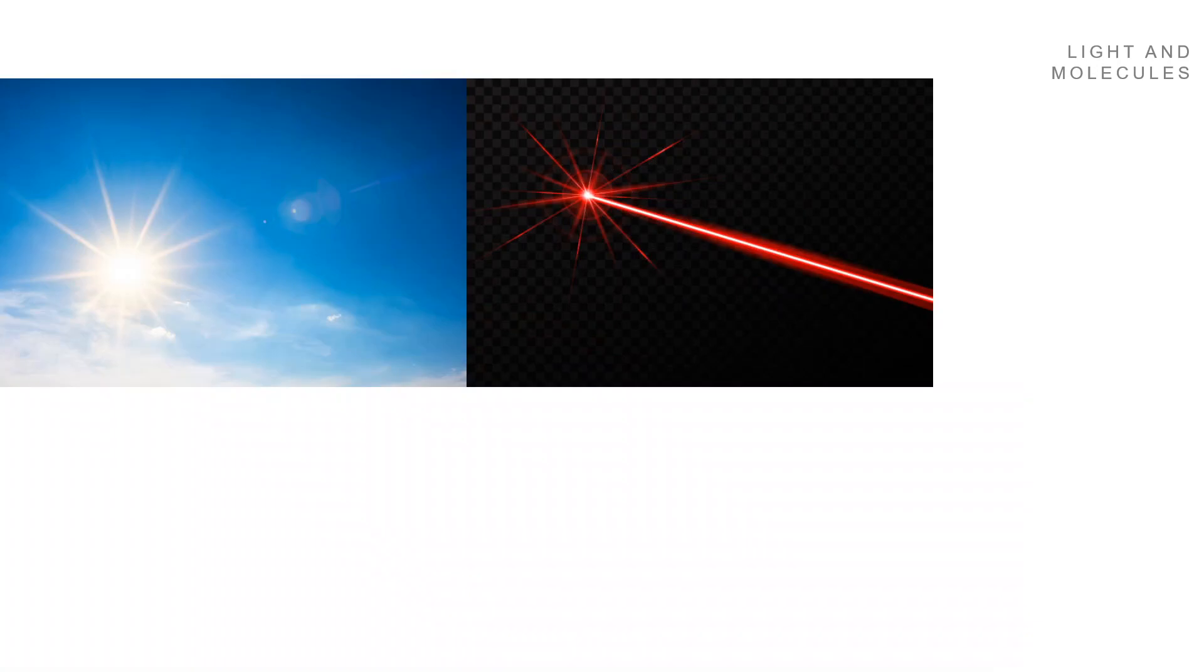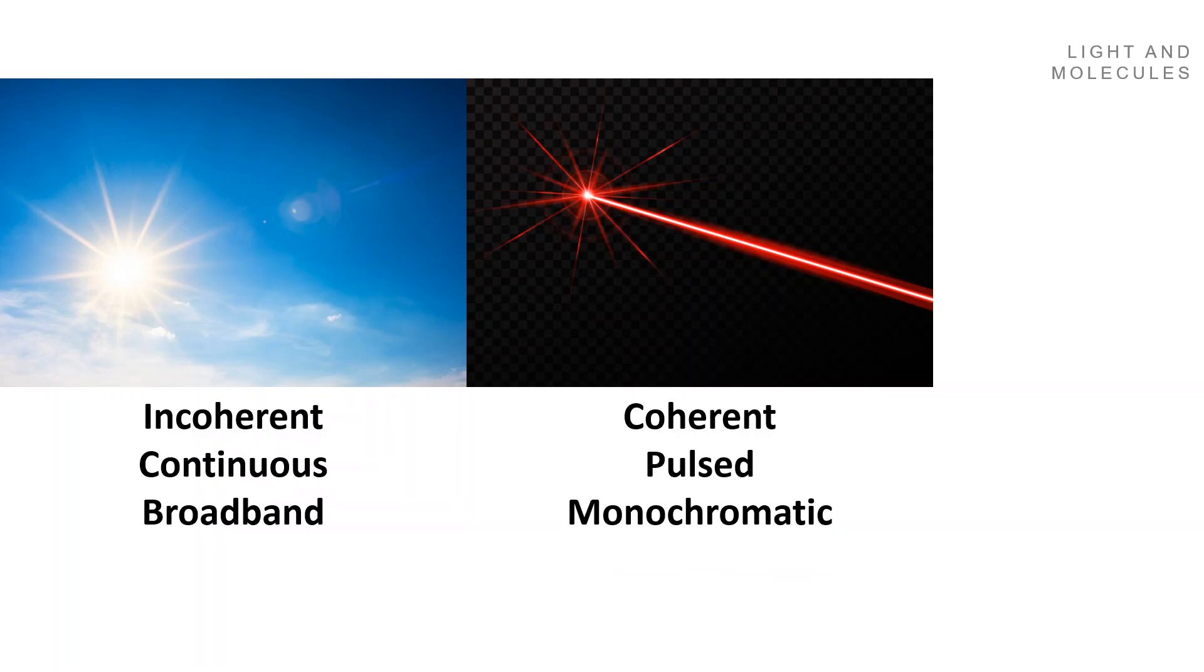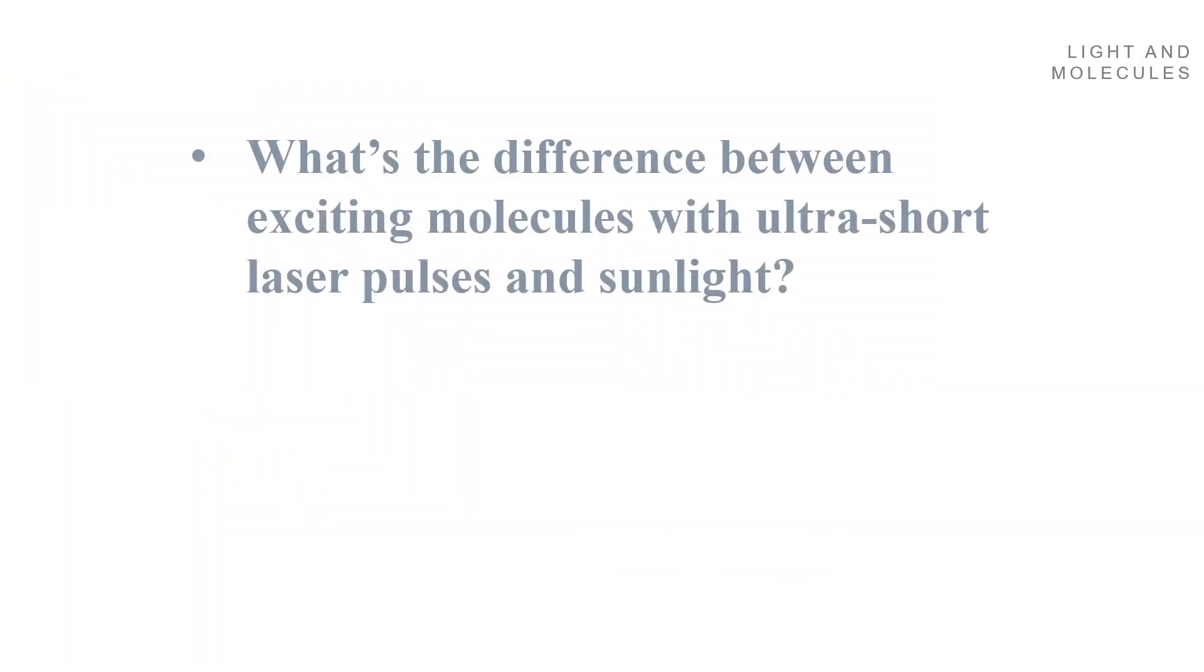However, these two light sources are very different. The sun is incoherent, continuous, broadband, while the laser is coherent, pulsed, monochromatic. Then, what's the difference between exciting molecules with an ultra-short laser pulse and with sunlight?